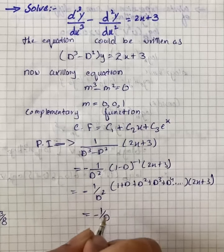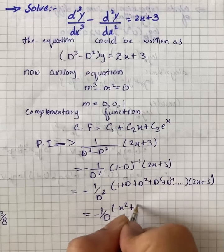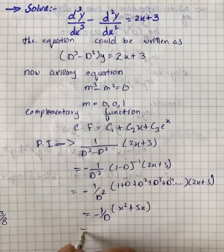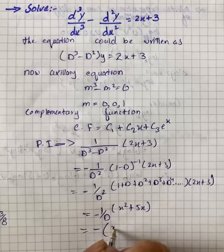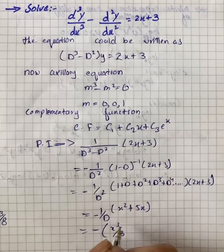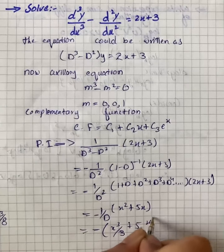This turns out to be -1/D into (x² + 5x), which gives us (3 + 2x²/2).